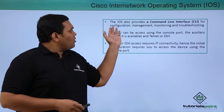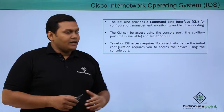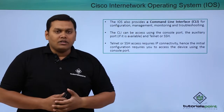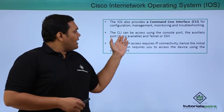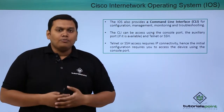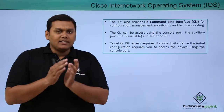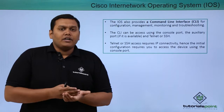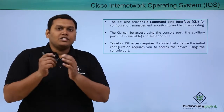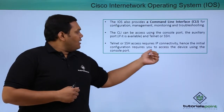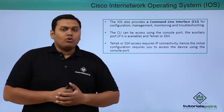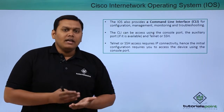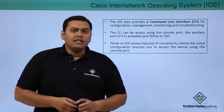Cisco IOS provides a command line interface for troubleshooting, configuration, management, and monitoring. The CLI can be accessed through the console port, the auxiliary port, telnet, and SSH. Telnet or SSH access can be provided with IP connectivity. For the initial configuration, you access devices using the console port, which allows you to troubleshoot, monitor, and configure the device.